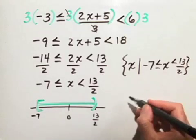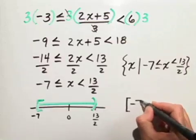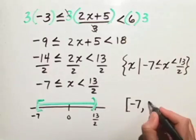In the interval notation, we can look right at the graph and draw the interval, starting at negative 7, including negative 7, all the way up to but not including 13 halves.